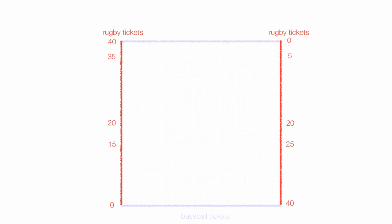So then we have a left and right hand vertical axis. We have a bottom and top horizontal axis and baseball tickets go on the bottom and baseball tickets go on the top.